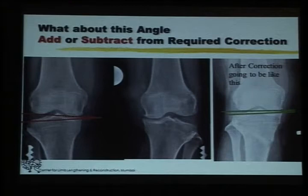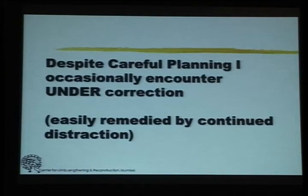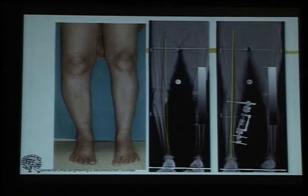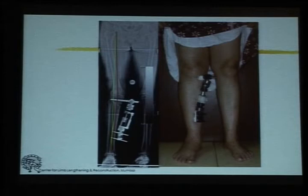With a fixator, undercorrection is not a difficult problem. Like in this patient where we planned a certain amount of correction, and you can see the green line is not through the base of the lateral tibial spine — the angle is only 182 degrees. All I have to do is continue distraction, call the patient back after three days, and I achieve adequate valgus with the axis passing through the base of the tibial spine. So I am able to get my correction perfect every time.